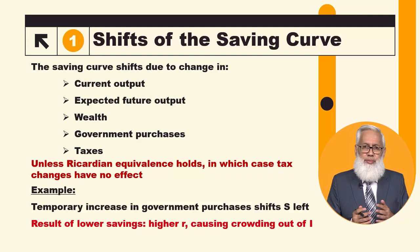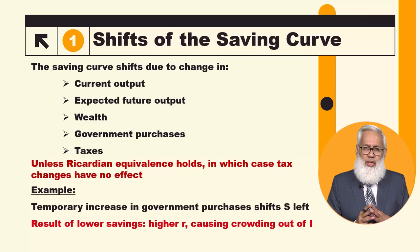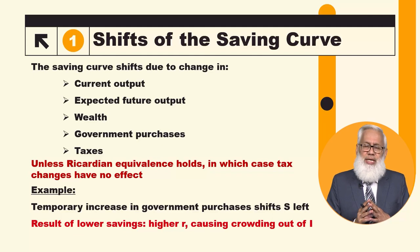Sometimes borrowing constraints and budget constraints are binding, which means Ricardian Equivalence may not fully hold in practice.